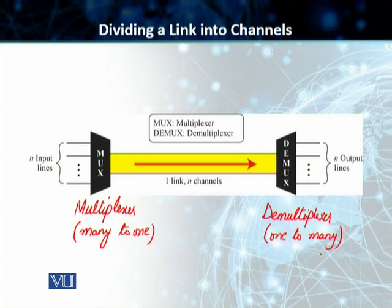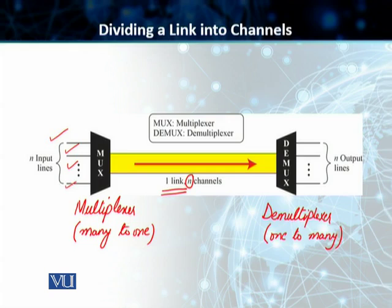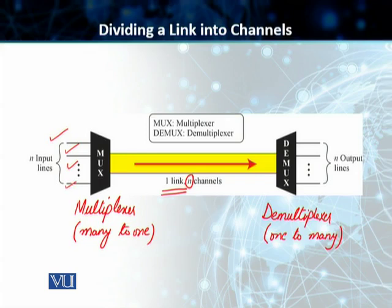In this case, we have only one link — one high bandwidth link — and then we have multiple channels, N channels in this particular case. We have N signals, shown by N input lines, and we pass them through a multiplexer. The multiplexer combines these input signals in the form of multiple channels. So for N input lines, we will have N channels, and these N channels are portions of the higher bandwidth link that carry our transmission between the given pair of devices. One link can have multiple channels. Our multiplexer combines multiple input lines into these N channels to be sent over one link, and our demultiplexer — which is a one-to-many device — again takes this stream and converts it into N number of output lines, and we get our original signal back.